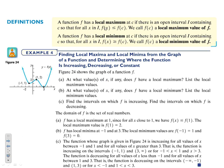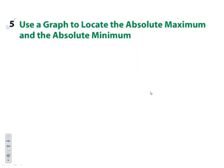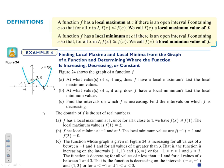Local max and min — local means we're not looking at the entire graph, just one specific area. A function has a local max if it has the highest y value in that zone, and a local min if it has the smallest y value in that zone. Looking at this wavy curve, at the point (1, 2) that's the local max.